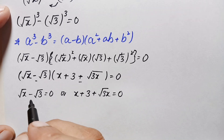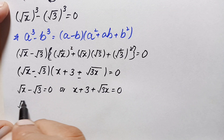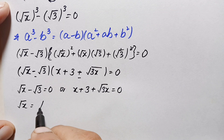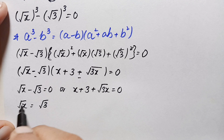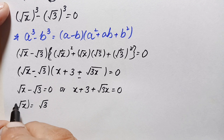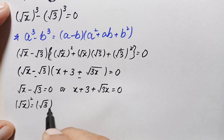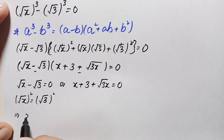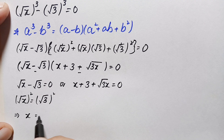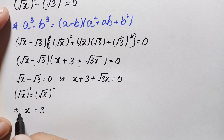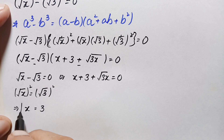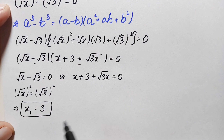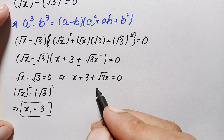Solving the first equation: √x = √3. Taking the square on both sides gives x = 3. So x = 3 is our first real solution, which we call x₁.